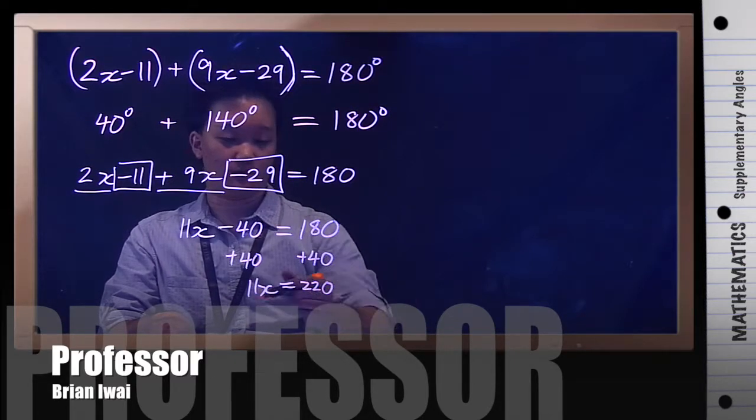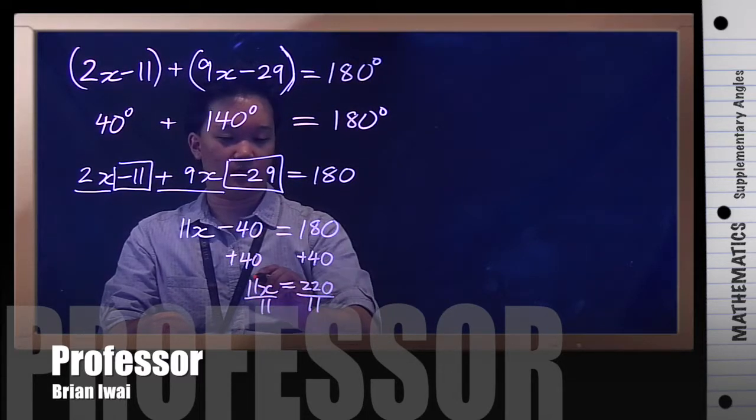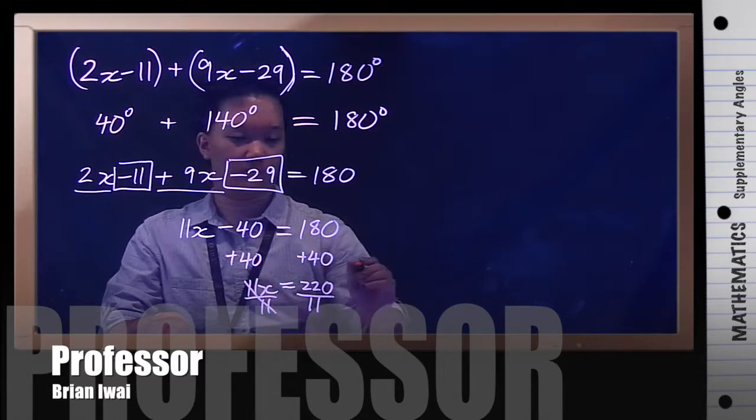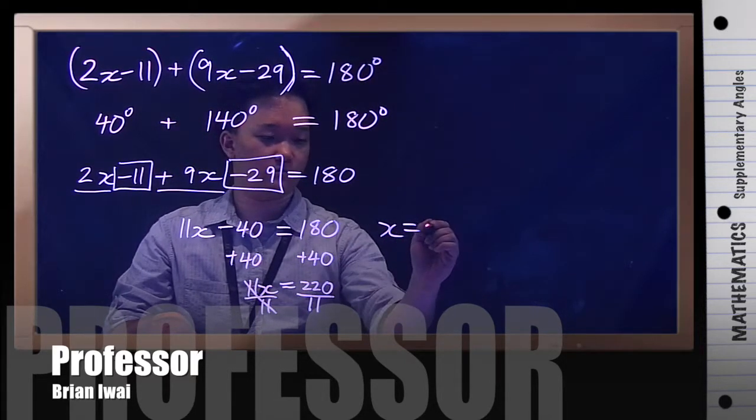Then you have just on the left side 11x equals 180 plus 40 gives you 220. Now to get x by itself just divide both sides by 11. So 11x divided by 11, that's gone, all you have is x equals 20.